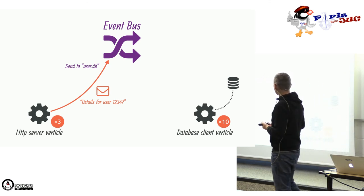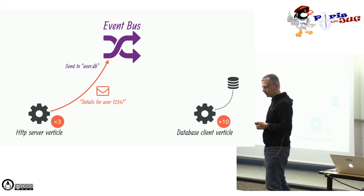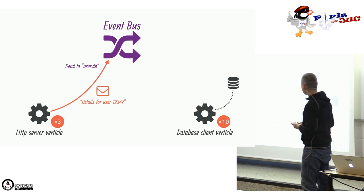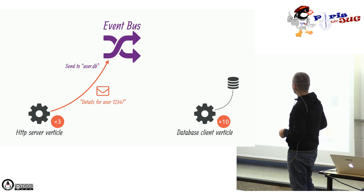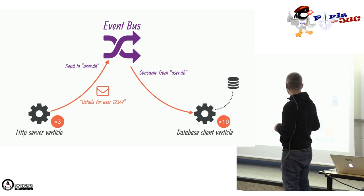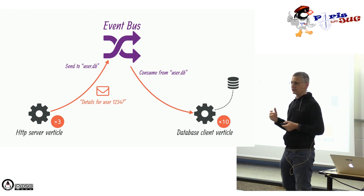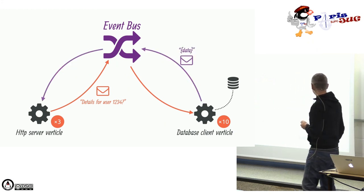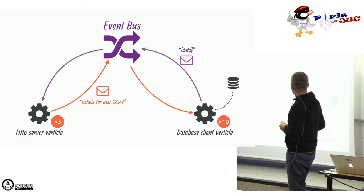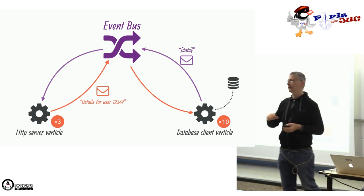L'EventBus offre plusieurs paradigmes. L'idée : j'envoie un message sur une adresse, qui est une chaîne arbitraire que vous choisissez. L'EventBus dispatche ce message au Verticle abonné, par exemple un Verticle client de base de données. Il fait son travail et répond au message — c'est le paradigme request-response. L'information retournée peut être du JSON, ou un objet Java si on ne fait que du Java. L'EventBus fait attention à l'immutabilité des objets transmis.